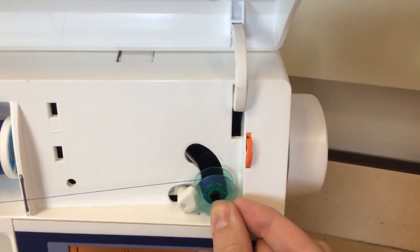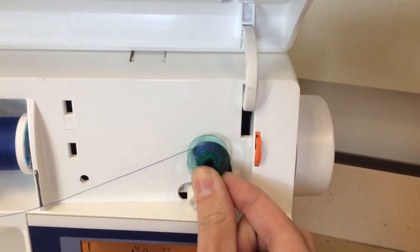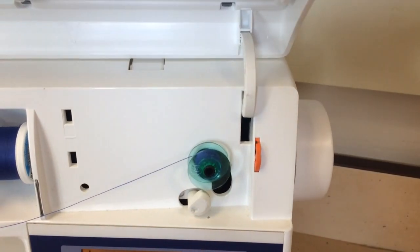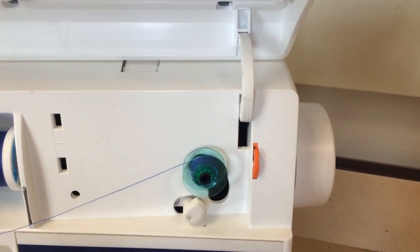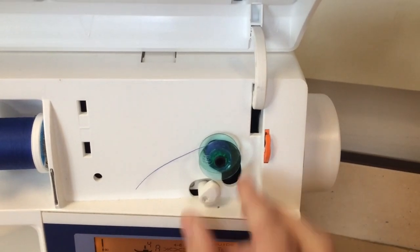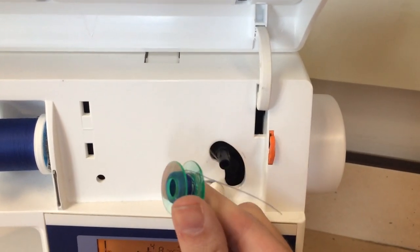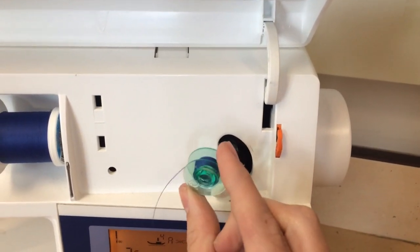When you're done, push the bobbin back up until it's in the unlocked position. Take your shears, clip your thread, and remove your bobbin. You've now successfully wound your Viking bobbin.